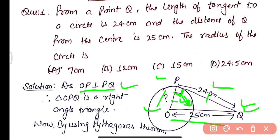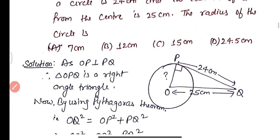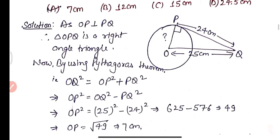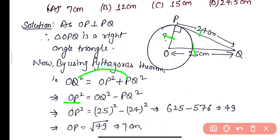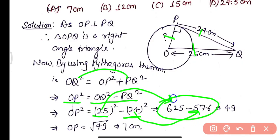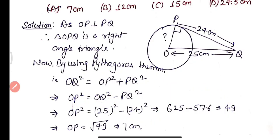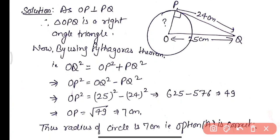The side opposite to the right angle will be the hypotenuse, so OQ will be the hypotenuse and the two sides will be the base and perpendicular. Triangle OPQ is a right-angle triangle, so we can use the Pythagoras theorem: OQ² = OP² + PQ². Therefore OP² = OQ² − PQ². OQ is 25 and PQ is 24, so OP² = 25² − 24² = 625 − 576 = 49. Thus OP = √49 = 7 centimeters.